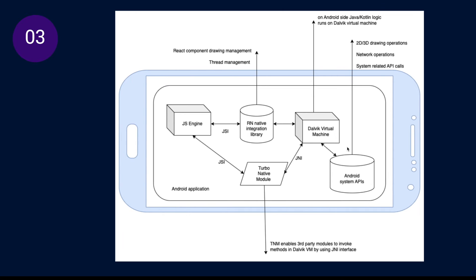On the Android side, we have a similar architecture, but the difference is on the Android side we have a Dalvik Virtual Machine. The React Native codebase is communicating with the native side over JSI, and our codebase is communicating over JSI with TurboNative Modules. TurboNative Modules is invoking the Dalvik Virtual Machine to invoke the system APIs. So as you can see, we are reaching the Java and Kotlin codebase here.